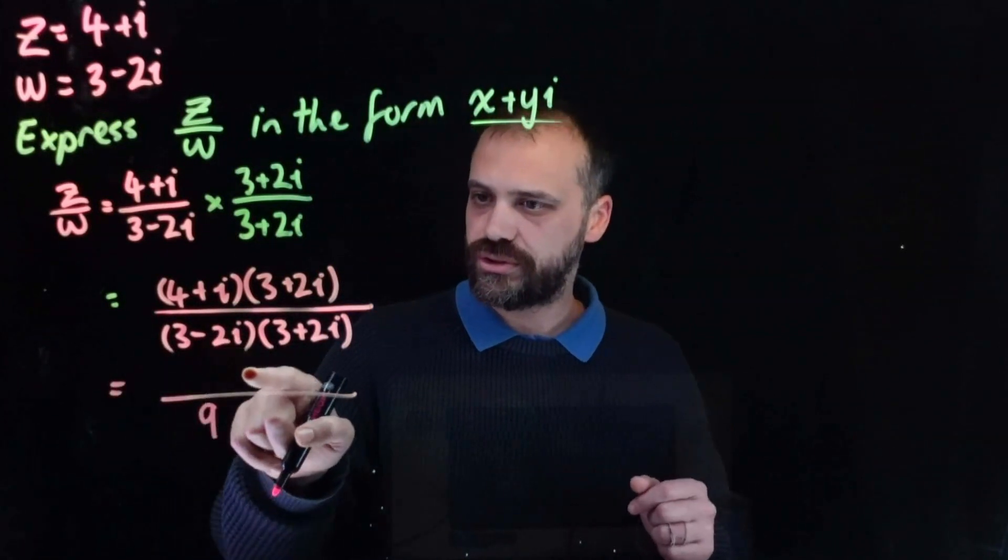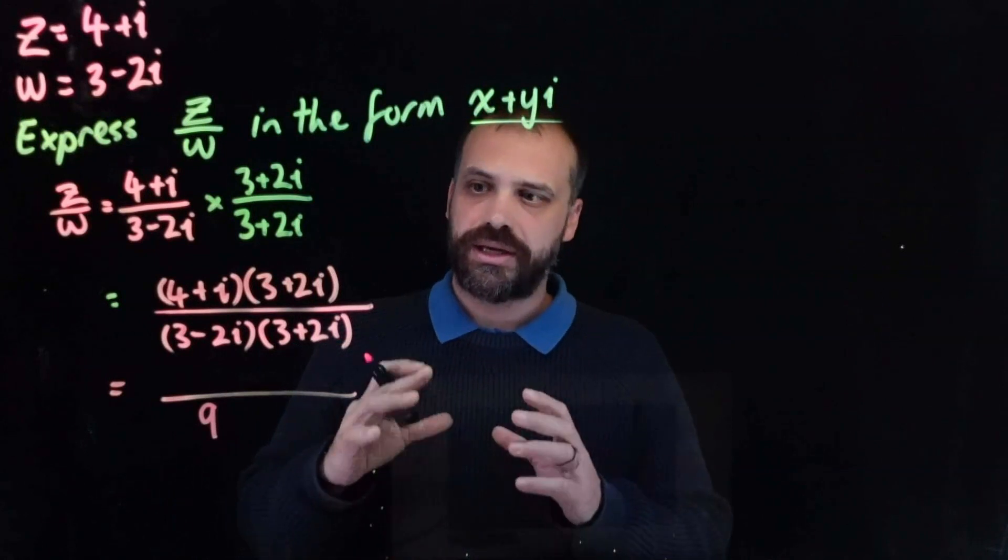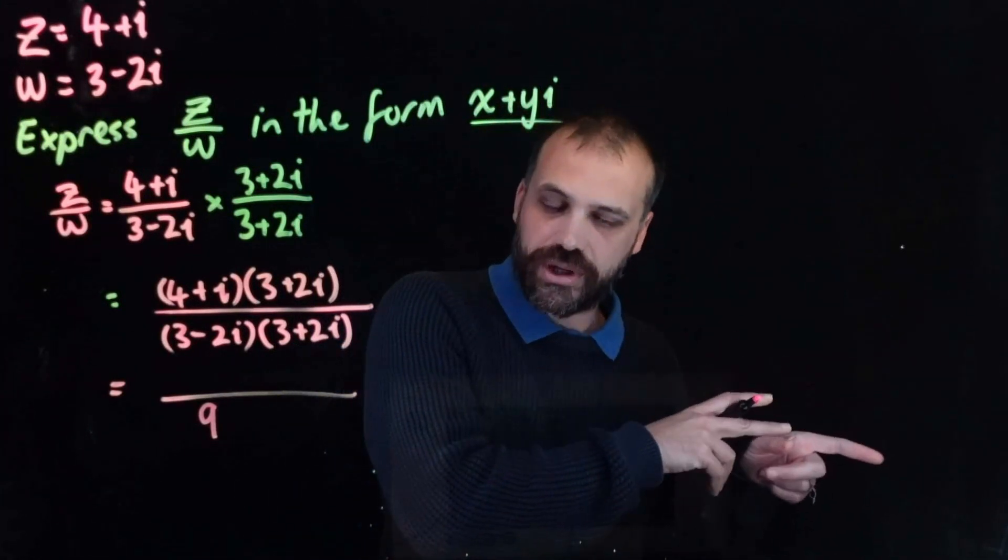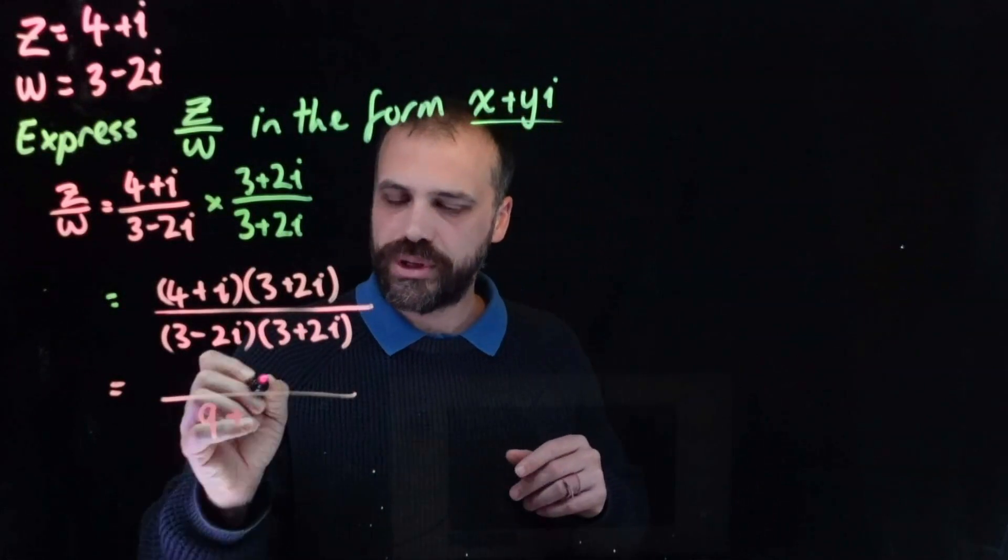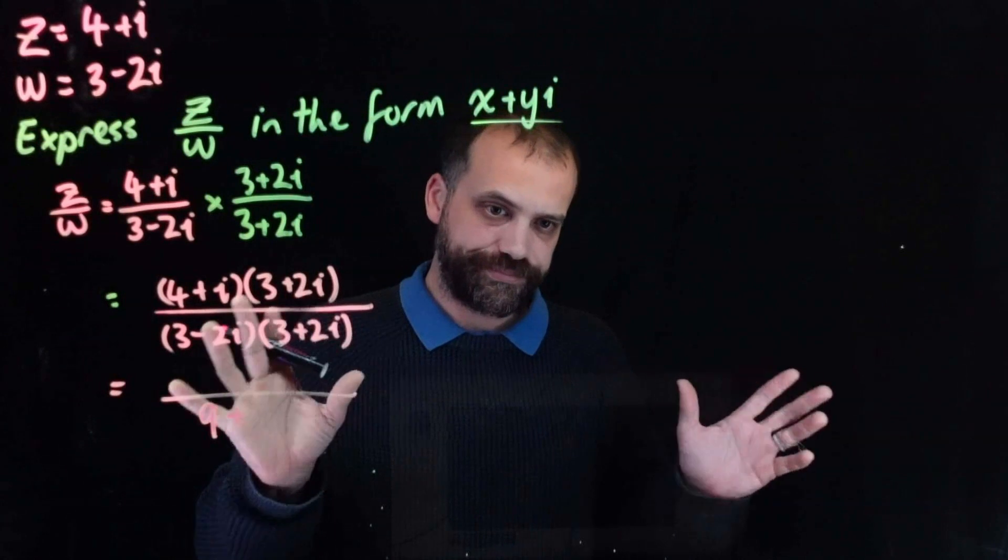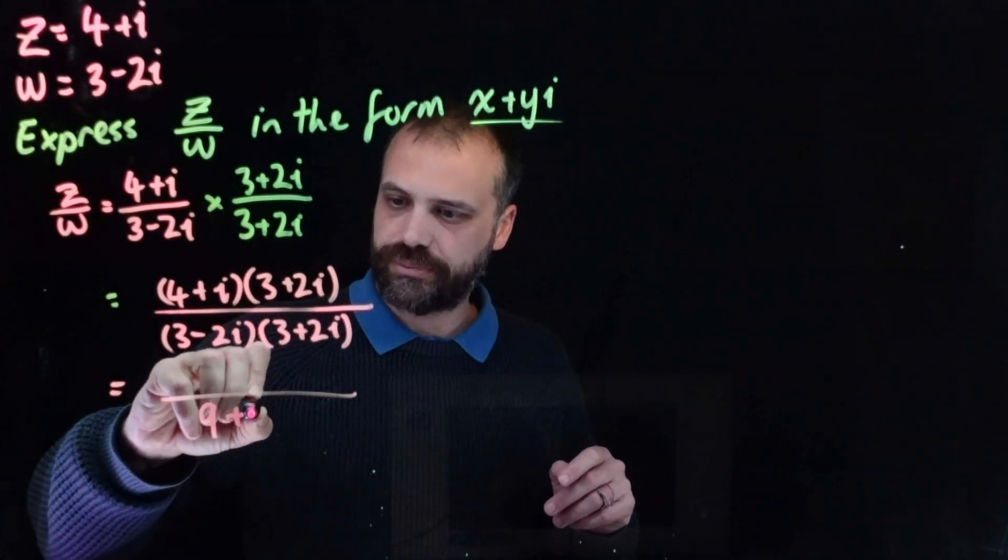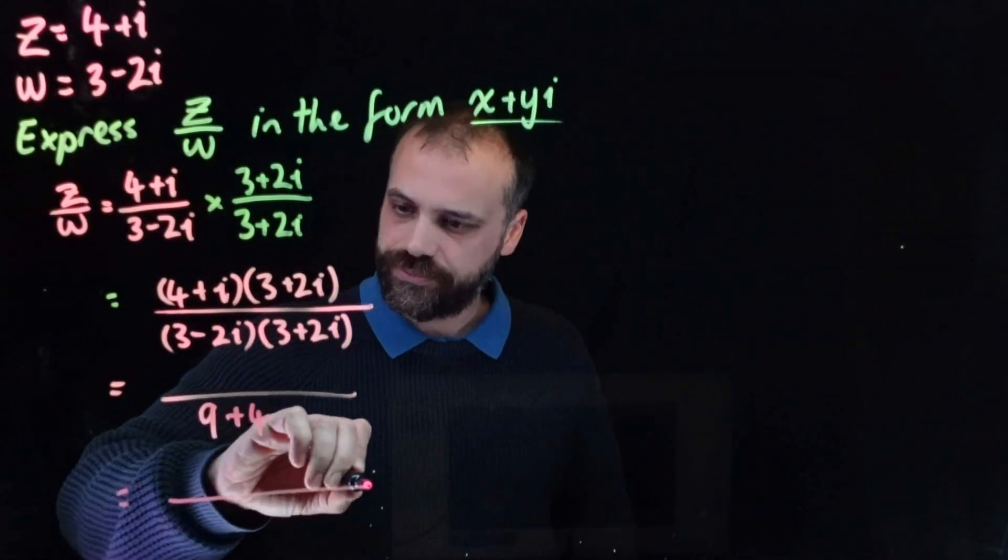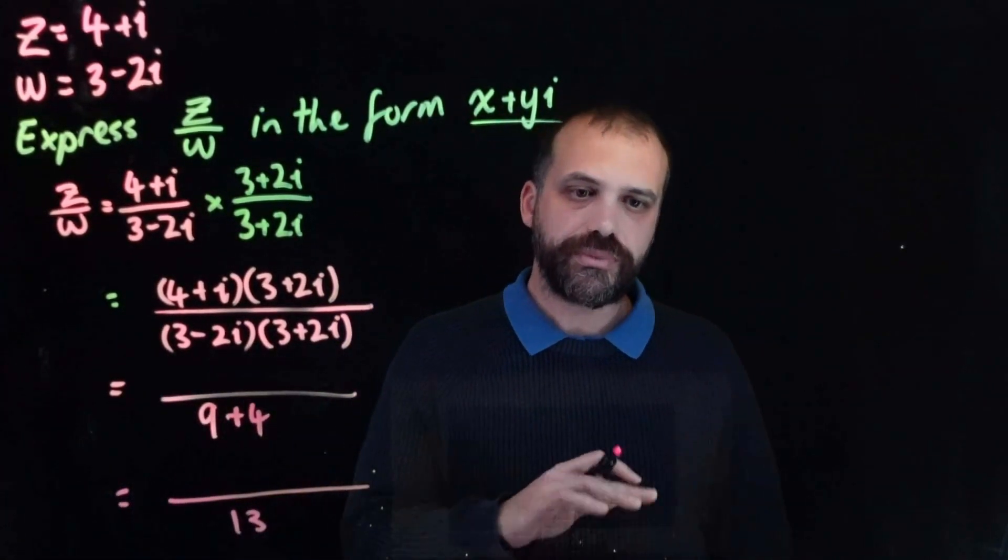Negative 2i times 2i is negative 4i squared, which is negative 4 times negative 1, which is positive 4. We always know this, that it's going to be this squared plus this squared. So 9 plus 4. Let's write one more line. 9 plus 4 is 13.